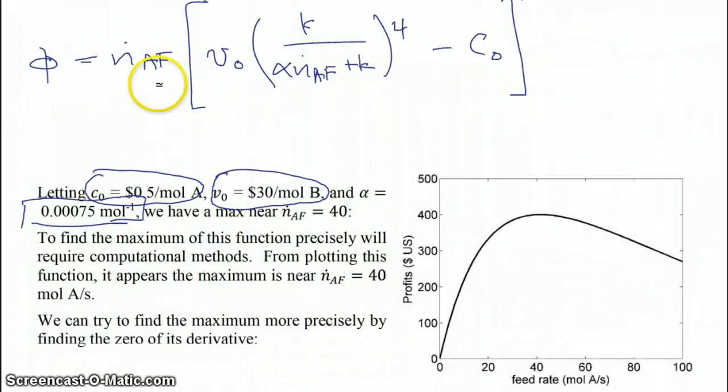So when you do that, what you find, if you just plot this function phi right here as a function of N A feed, what you get is a maximum in your profit function near where N dot A feed equals 40. So if we want to find this maximum precisely, it's going to take these computational methods, which we're about to employ with F0.